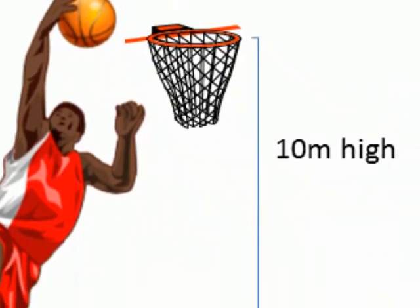Imagine how basketball would change if we lowered the height of the basket hoop from three meters down to one meter and widened it from 46 centimeters to 96 centimeters. It might end up more like hockey or soccer.